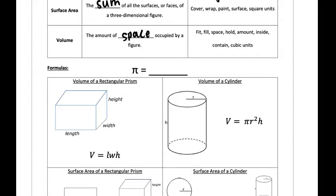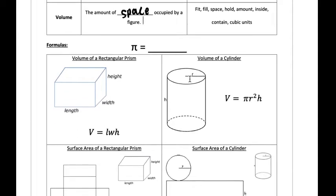Some key words for volume are: fit, fill, space, hold, amount, inside, contain, and cubic units. For volume, that would be something like how much does this jar of jelly beans have inside of it — how many jelly beans are in it, the amount of space being taken up by that object.